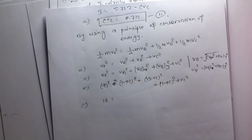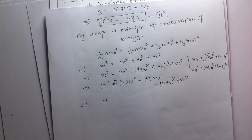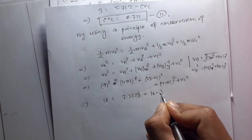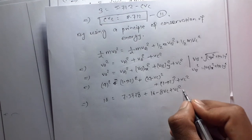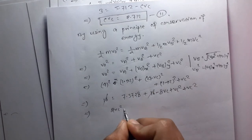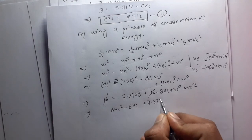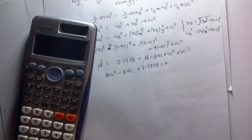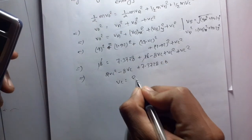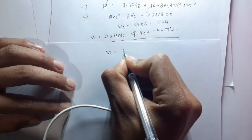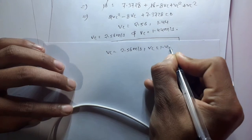Substituting the values: 1.92 squared times 2 gives 7.3728. We get 16 minus 8vBC plus vBC squared plus vBC squared, so 2vBC squared minus 8vBC plus 7.3728 equals 0. Solving this equation using a calculator, we get vBC equals 2.56 or vBC equals 1.44 meters per second.